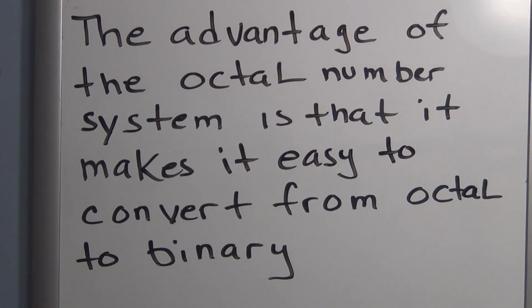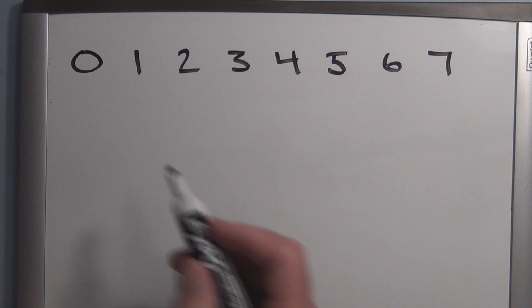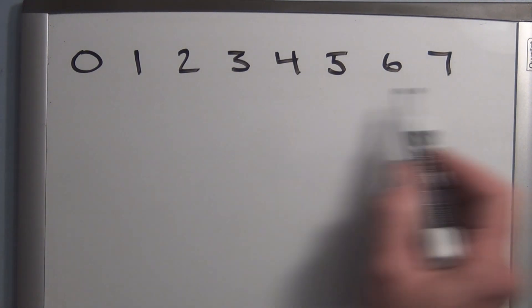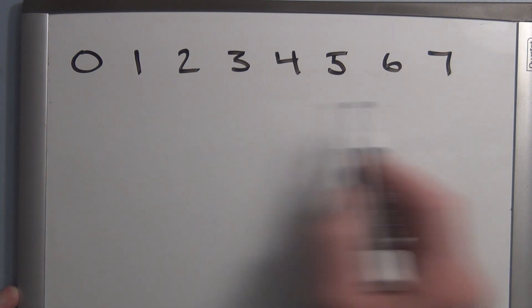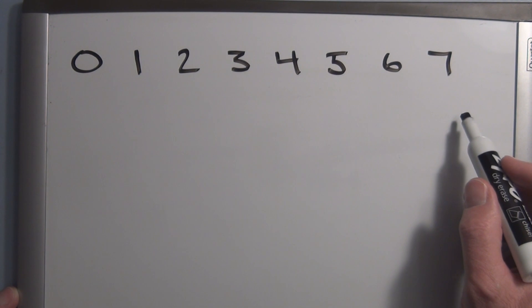The advantage of the octal number system is that it makes it easy to convert from octal to binary. So if you had a large decimal number that you needed to convert to binary, you would convert it first to octal and then from octal to binary. So in the octal number system, we have 8 possible digits or symbols 0 through 7, and the equivalent binary, to count from 0 to 7, we need a 3-bit binary number.